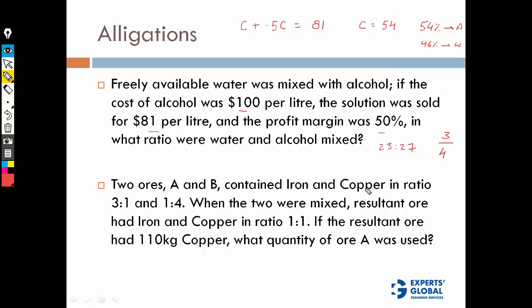3/4 is iron out of total in ore A. Iron out of total in the second ore is 1/5. The resultant is 1:1, so iron would be 1/2.